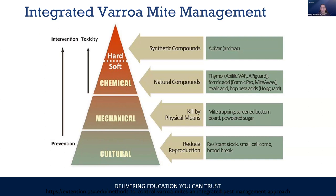At the bottom of the pyramid, we already talked about using resistant stock. Now I'll go over the other two cultural controls: small cell comb and a brood break.